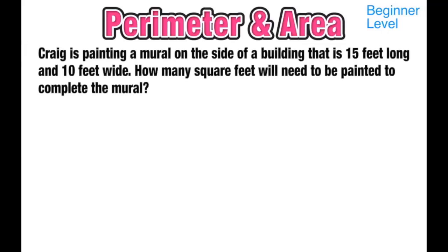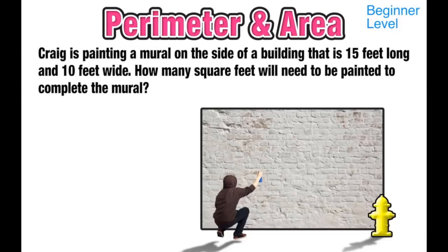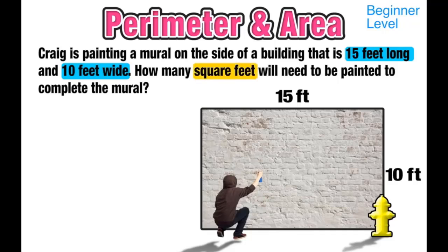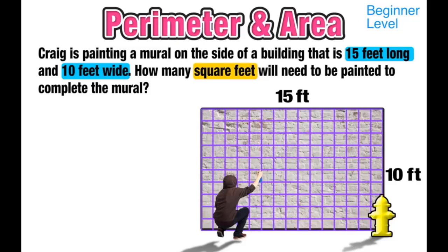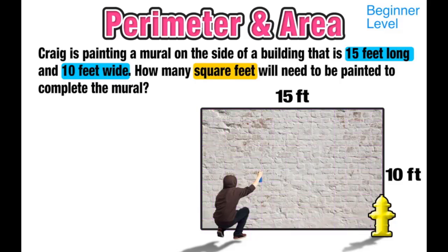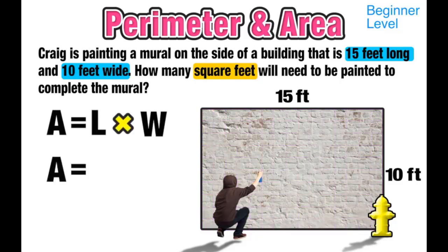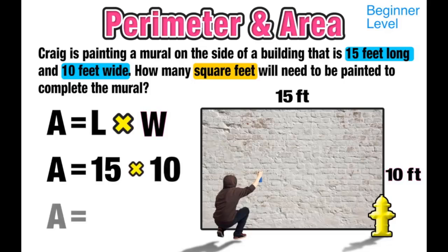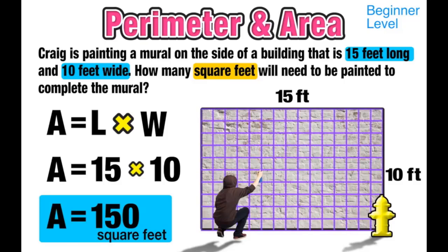For our next scenario, we join a street artist named Craig, who's painting a mural on the side of a building that's 15 feet long and 10 feet wide. We want to find exactly how many square feet he'll have to paint to complete the mural. Since we want square feet inside the rectangle, this is an area question. Using the formula: length times width — 15 times 10 — equals 150 square feet that Craig will have to paint.